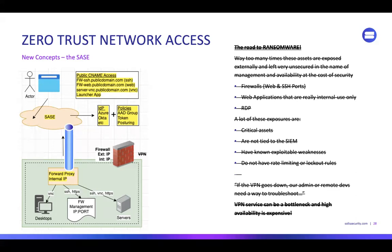The SASE is going to do your identity and your policies to make sure when that person logs in they have a proper token and the session has expired properly. This is a forward proxy — inside your network you put this little connector as a tunnel, and that tunnel forward proxy is the SASE. Those public DNS names point from the CNAME to Cloudflare SASE, and we can expose all of these without them being directly online. No more ransomware road mapping — we're done.